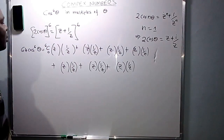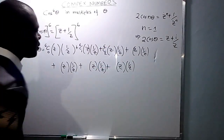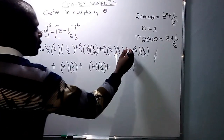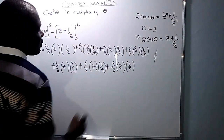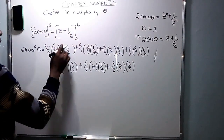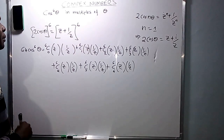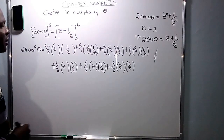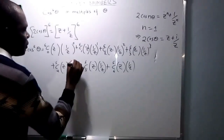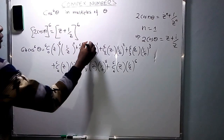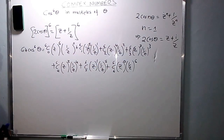The first coefficient is 6 combination 0, the second is 6 combination 1, the third is 6 combination 2, then 6 combination 3, 6 combination 4, 6 combination 5, 6 combination 6. One power is ascending starting from 0, 1, 2, 3, 4, 5, 6, and the other descends starting from 6, 5, 4, 3, 2, 1, 0.